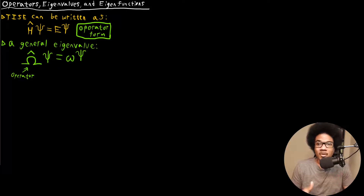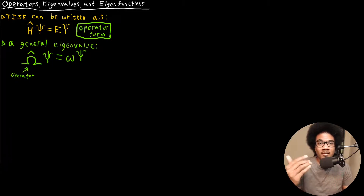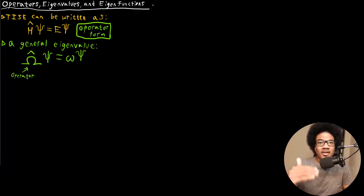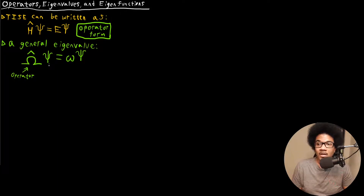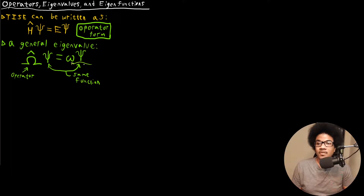An operator can be anything: the addition symbol, subtraction, taking an integral. Anything in mathematics that's telling you to do something — it's not a function defining something along some coordinate, and it's not a number quantifying something. It's an operator; it's telling you to do something to a function or to a number. The key here in pointing out these eigenvalue equations is that the functions on both sides must be the exact same function, and this small omega must be a constant or a scalar.